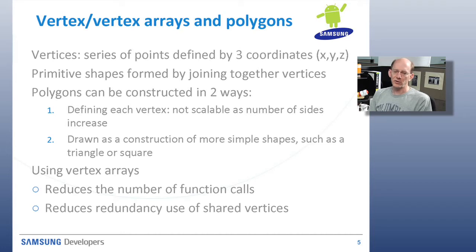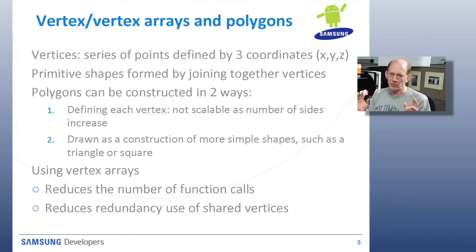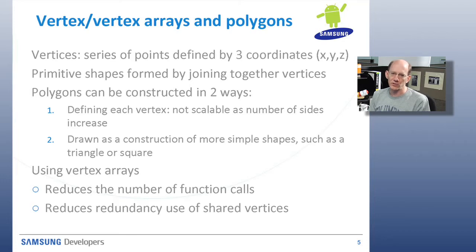Vertices are a series of points defined by three coordinates. This is 3D graphics, so hopefully you have something that's three-dimensional. Primitive shapes can be formed by joining together vertices. Polygons can be constructed in two ways: you could define just a bunch of vertices and have the actual polygon — like a dodecahedron — but that gets complicated as the number of sides increase. You can actually construct any polygon you want out of much more simple shapes. What's used most often are triangles. When you hear about tessellating something and the number of triangles involved, that's what's meant by that. Using a vertex array reduces the number of function calls and allows you to reduce redundancy because you can reuse shared vertices.